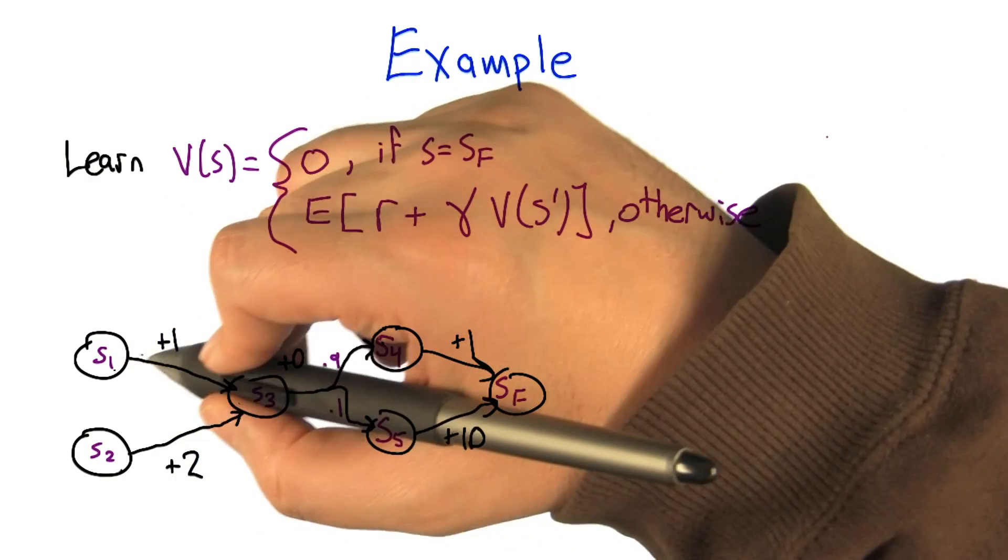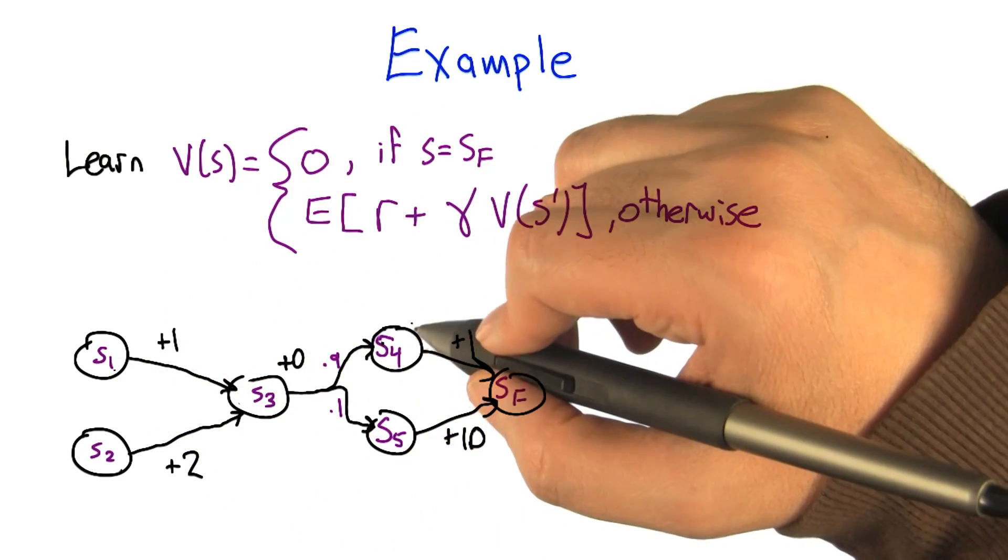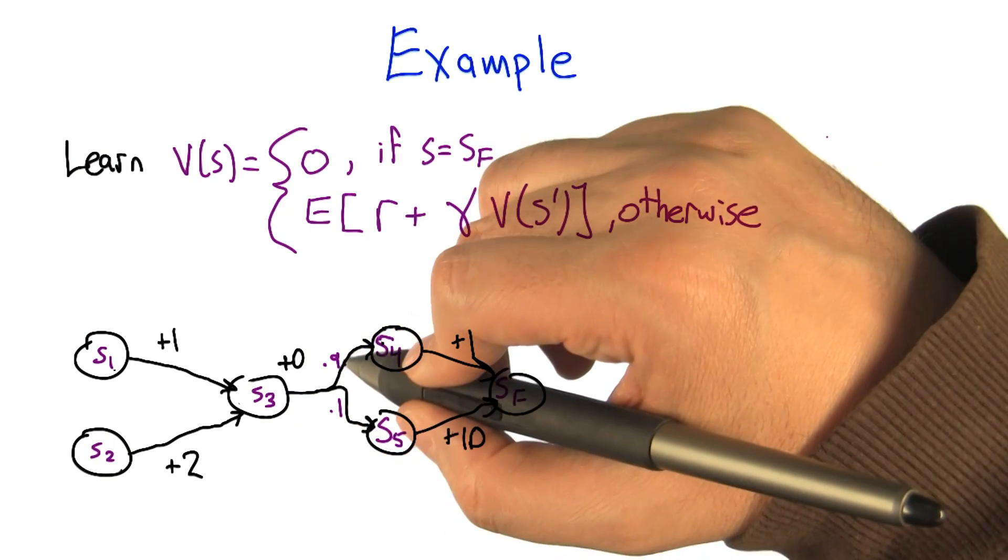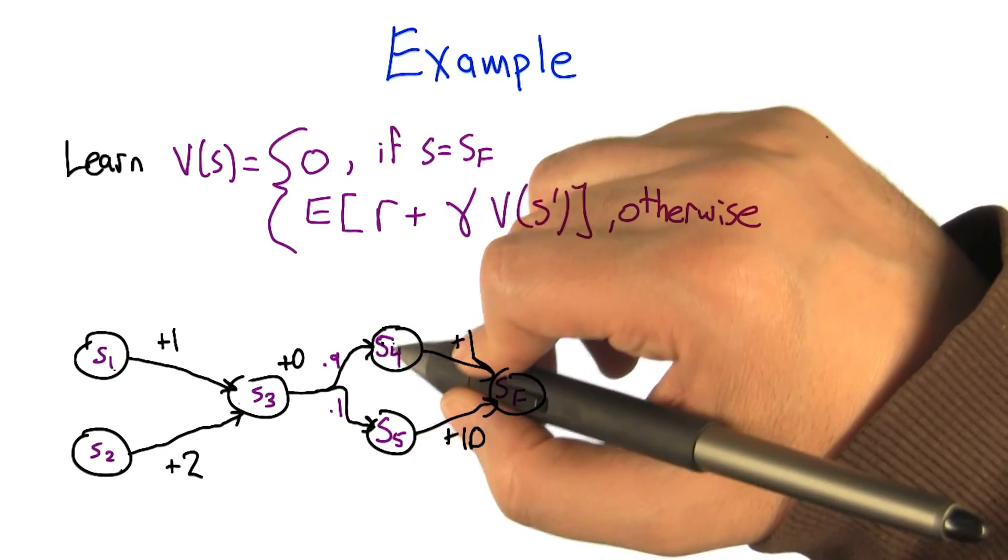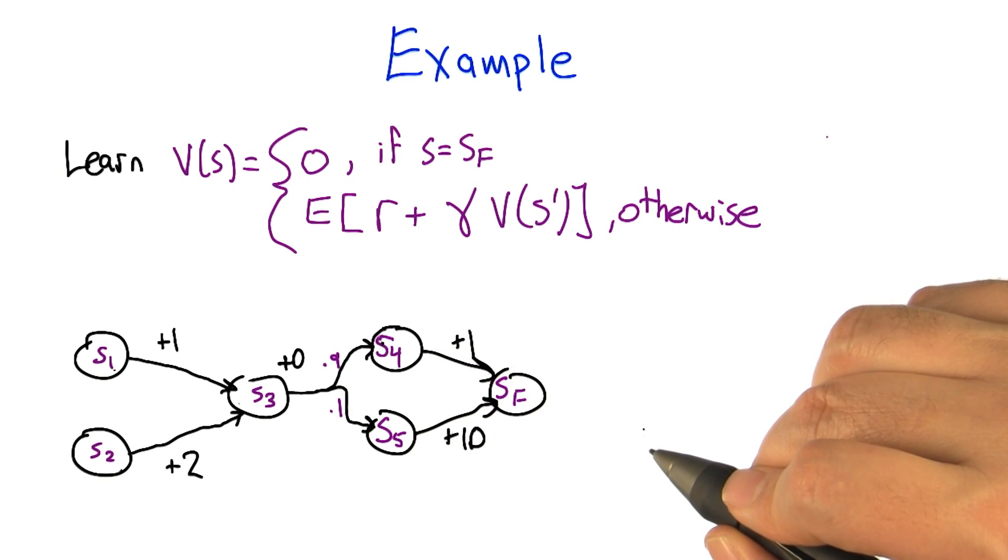I've labeled each of the transitions with the reward that happens when you make a transition from that to the next. This particular transition out of S3 is actually a stochastic transition, with 90% probability going to S4 and 10% probability going to S5.